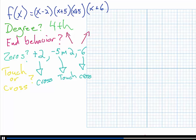So when I go to graph this, it's going to look something like this. On the x-axis at positive 2, we're going to have a point. On the x-axis at negative 5, 1, 2, 3, 4, 5, we're going to have a point. And on the x-axis at negative 6, we're going to have a point. The end behavior says it's going to go up to the left, so let's draw it up to the left. And it's going to go up to the right, so we'll draw that up to the right.